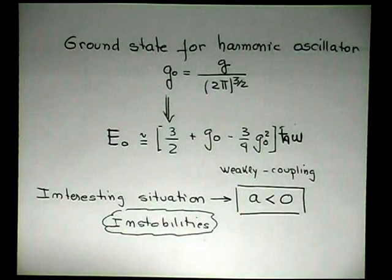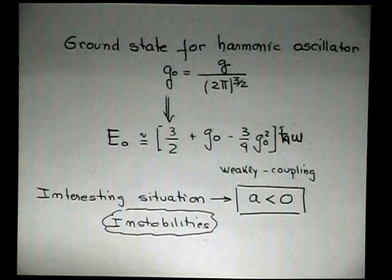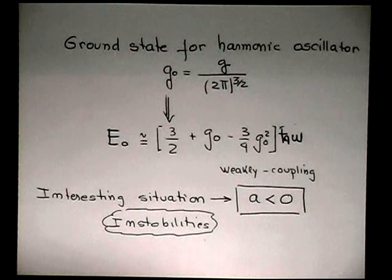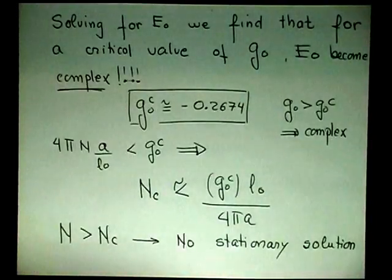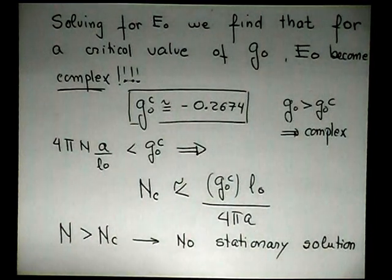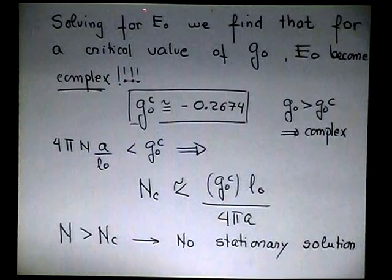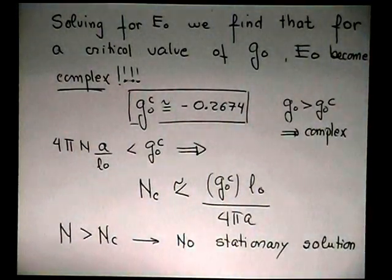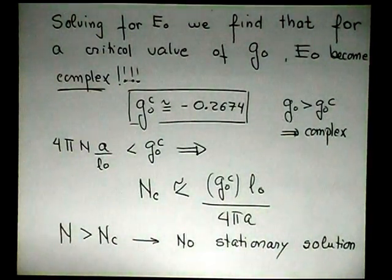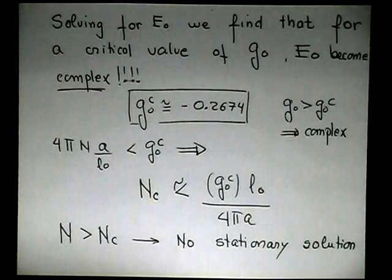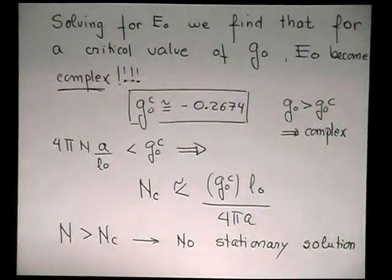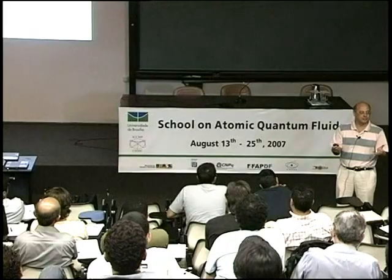If you have an attractive system, as I showed you yesterday, the system is going to present instability. And if you do this calculation, and I had a student, Alex Gama, which is now in Bahia, that did a thesis on this. If you solve, suppose G is negative, because the scattering is negative. And then you solve the problem, and you start to vary the number of particles. Suddenly, you get a complex energy. And you all know what means a complex energy, right? It means an unstable system.